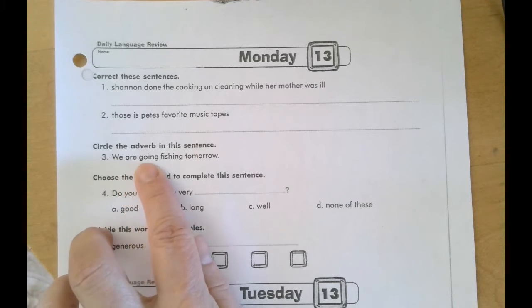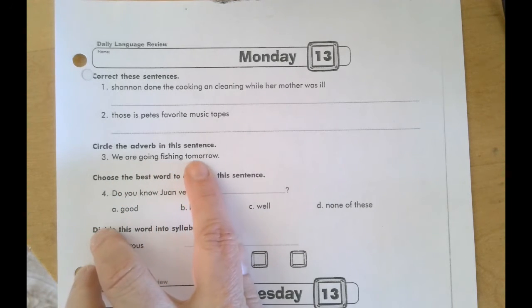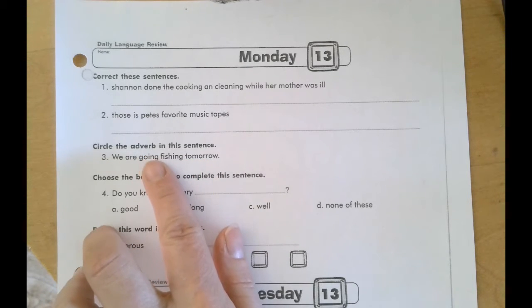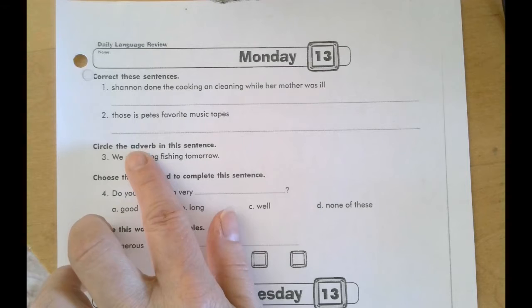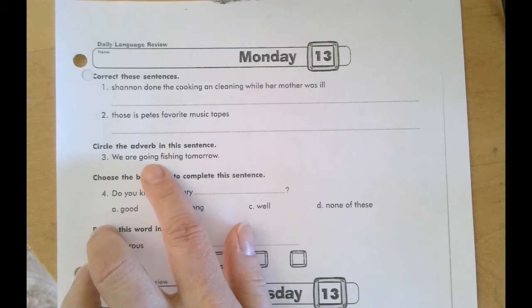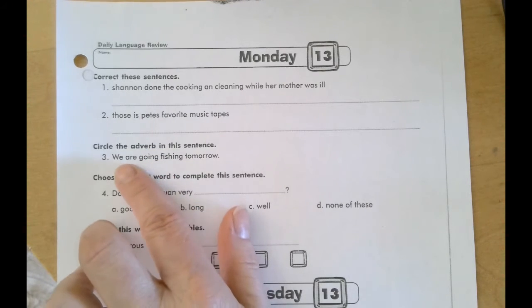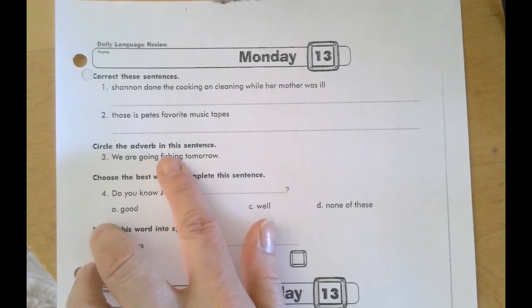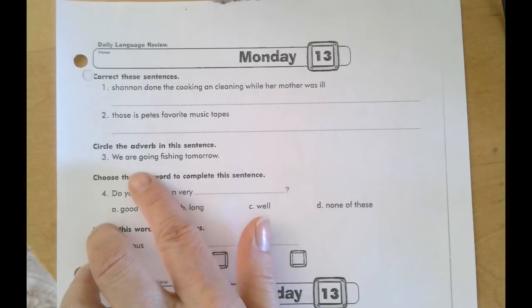Number three, circle the adverb in this sentence. We are going fishing tomorrow. Now if you can't remember what an adverb is, grab your flip book. But there's pretty big hints. A verb is your root word. An adverb adds to the verb. It tells more about it. So if you can figure out your verb in your sentence, this word will tell you when or where this verb will be happening. So which one of these words is your adverb, giving more information about the verb?